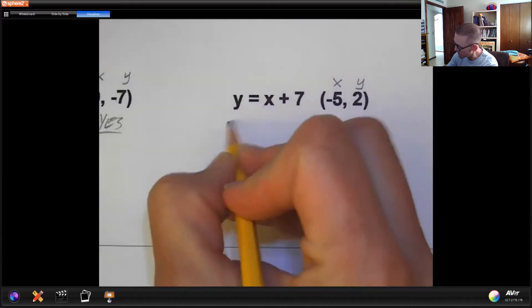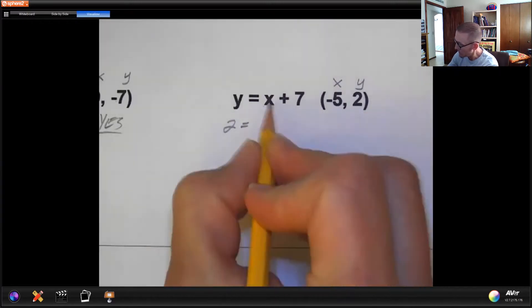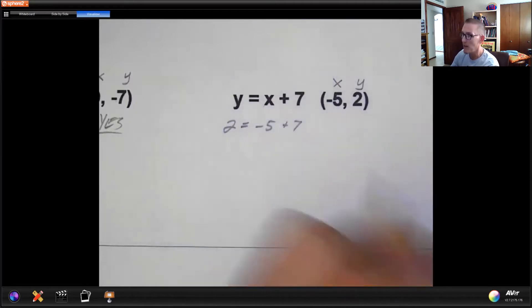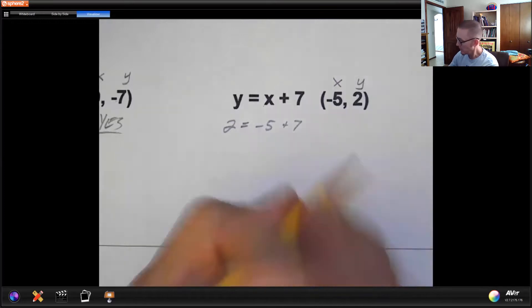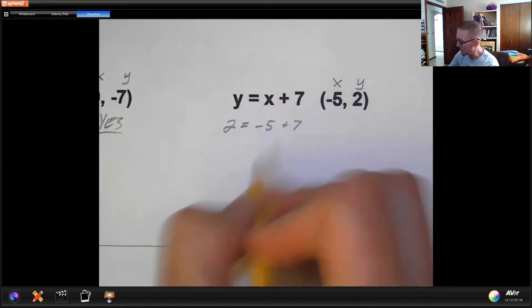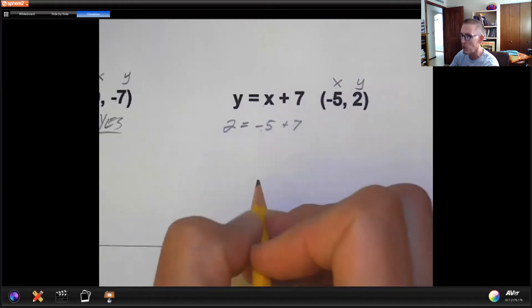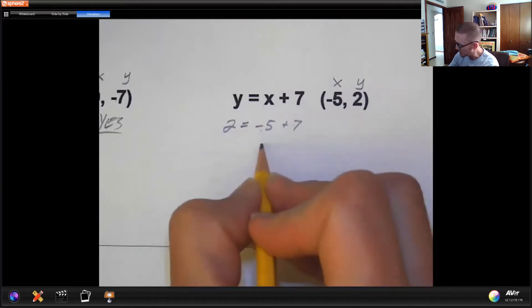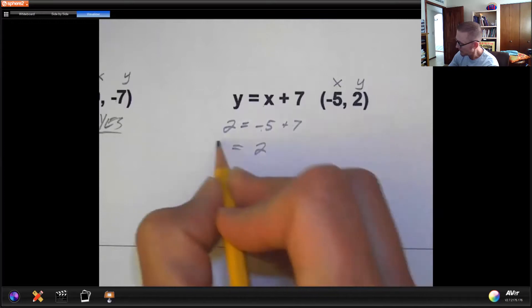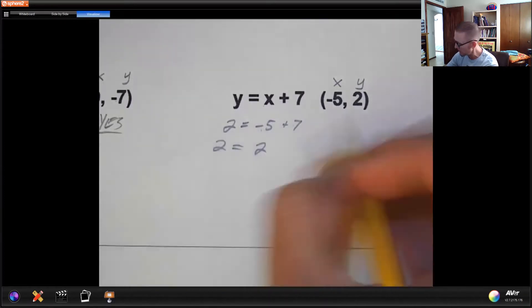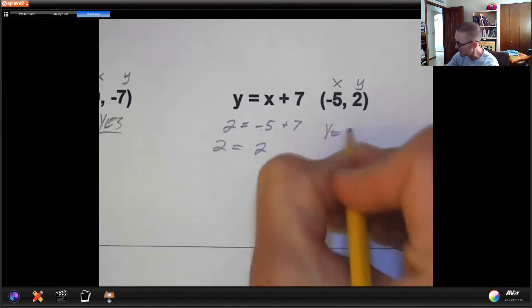So y becomes 2 equals x becomes negative 5. And then bring down the plus 7. Negative 5 plus 7. Well, integer rules. They're different signs. So I subtract and keep the larger side, which becomes 2. And 2 equals 2. They equal the same thing. So this one is a yes.